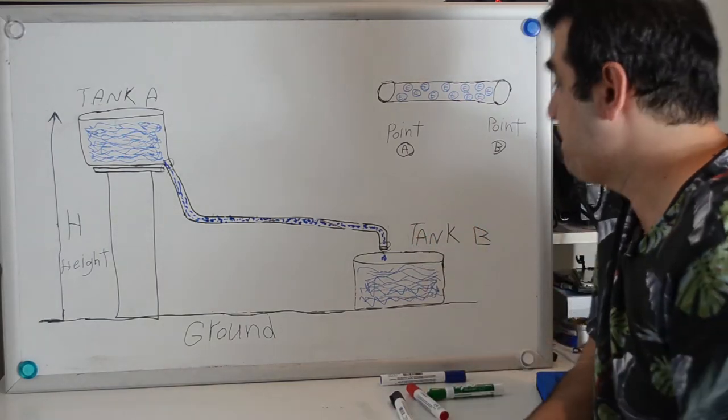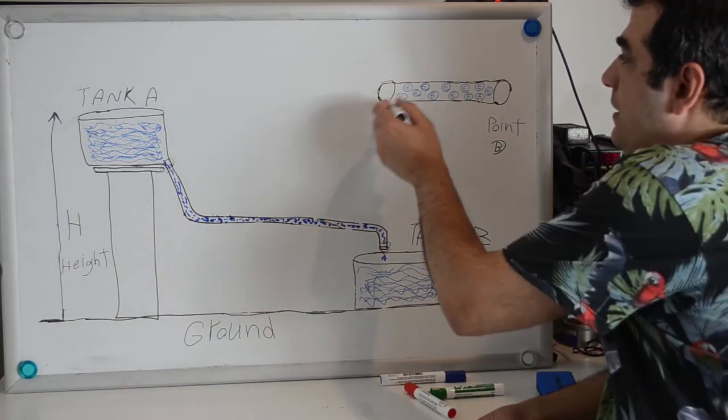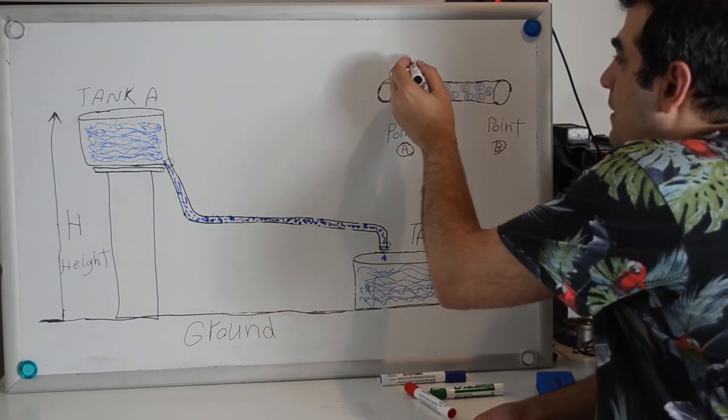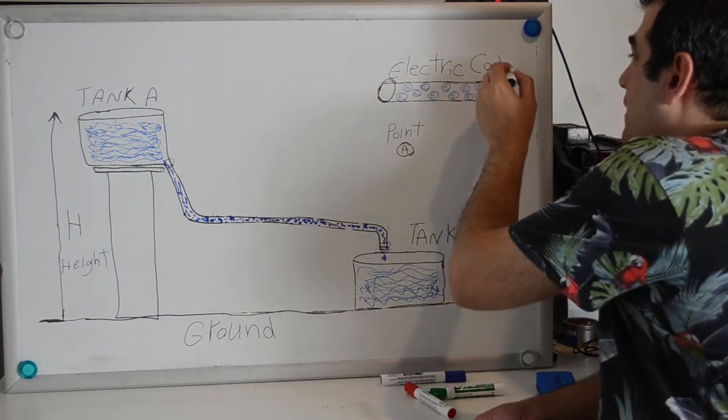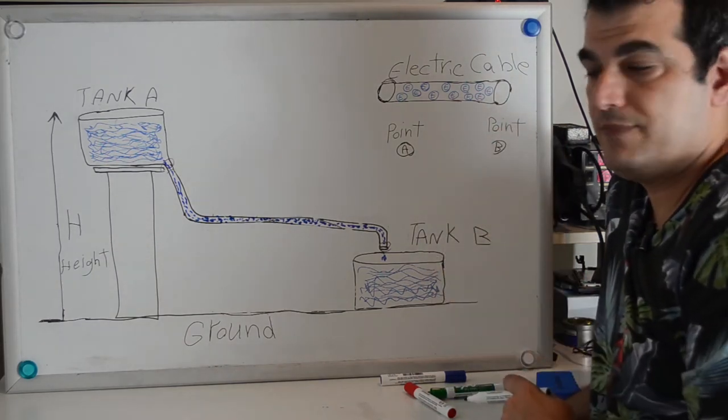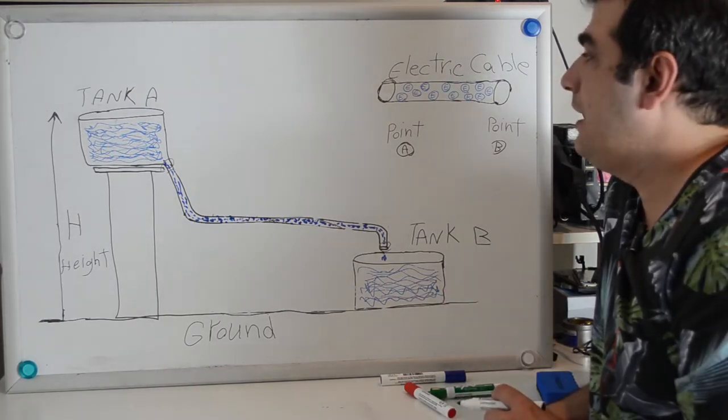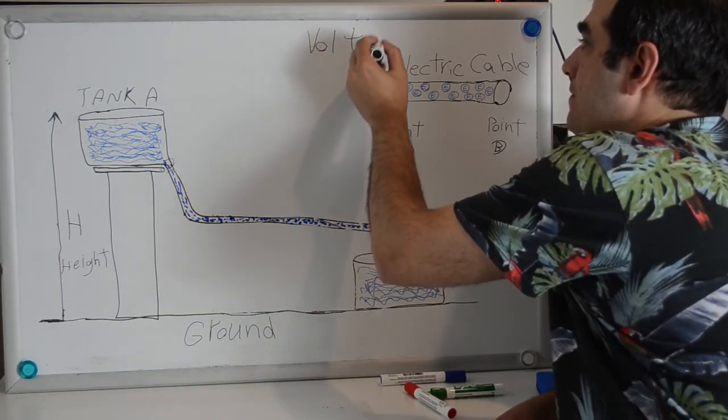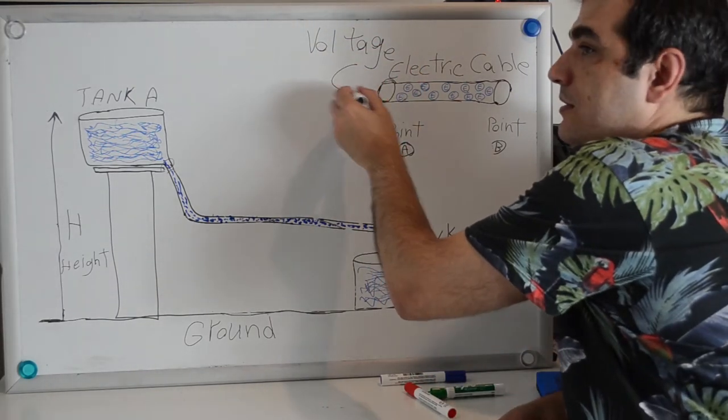Now please look at the picture. First I talk about electric current. Think of this as an electric cable. Inside the electric cable are electrons. Electrons need power to move, and voltage causes the electrons to move.